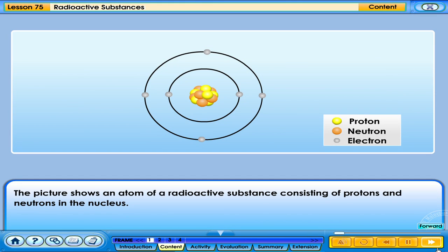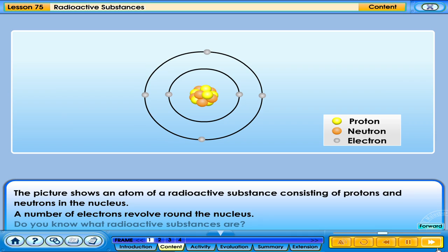The picture shows an atom of a radioactive substance consisting of protons and neutrons in the nucleus. A number of electrons revolve around the nucleus. Do you know what radioactive substances are?